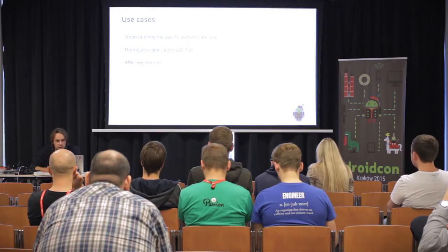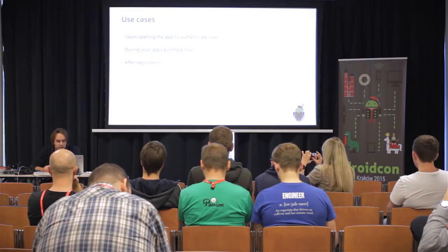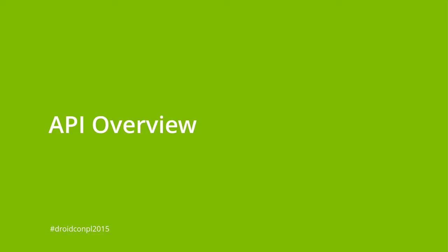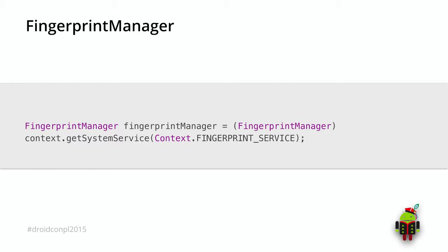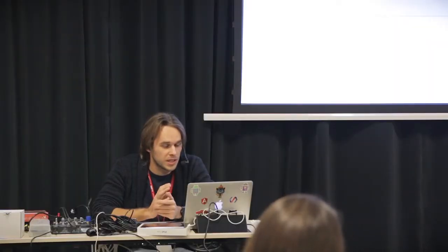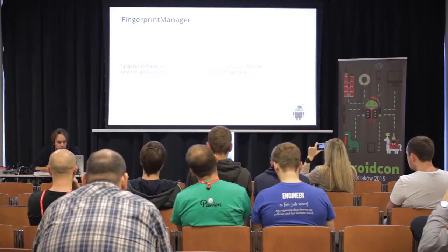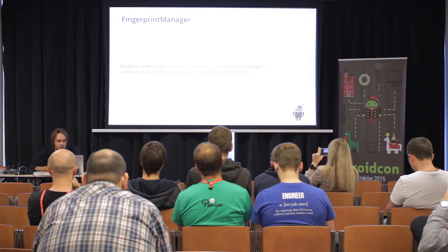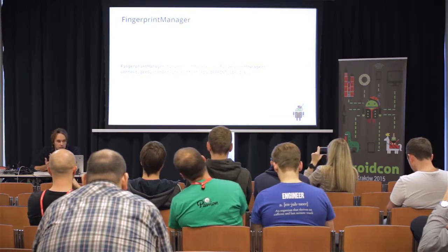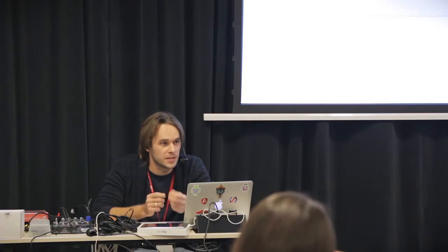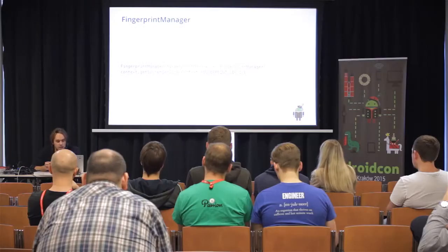Let's see how this API looks. Our basic friend is FingerprintManager — it's a system service. We can get it from our current context. It coordinates all access to fingerprint hardware. Using it, we can check if we have a device with a sensor and if we have registered fingerprints on the device.